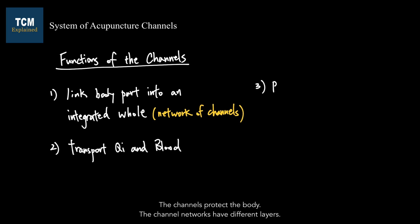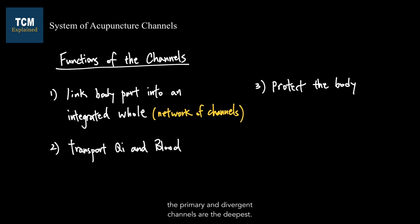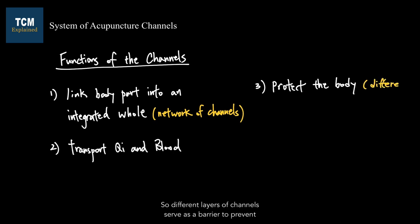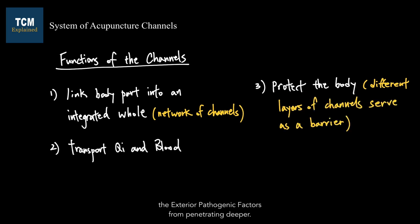The channels also protect the body. The channel networks have different layers — the cutaneous regions are the most superficial, and the deep pathways of the primary and divergent channels are the deepest. There are exterior pathogenic factors such as wind or cold that invade our body from the exterior. Once they penetrate our skin, they will keep attacking deeper channels and even our internal organs. Different layers of channels serve as a barrier to prevent these pathogenic factors from penetrating deeper.